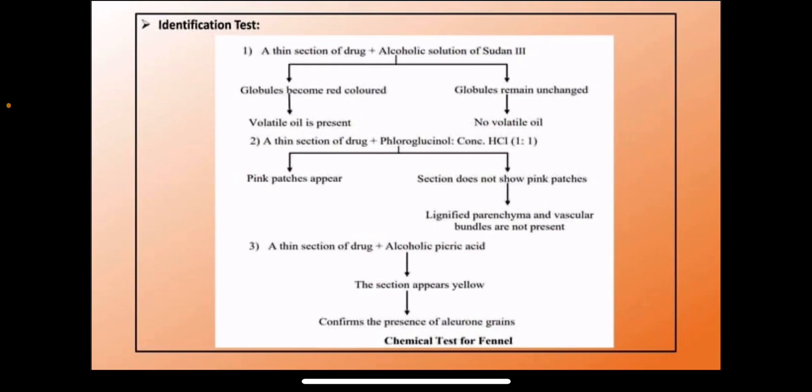Identification tests for fennel: First test — a thin section of the drug is taken and alcoholic solution of Sudan III is poured. The globules become red due to Sudan III, indicating presence of volatile oil; globules that remain unchanged contain no volatile oil. Second test — a thin section of the drug is treated with fluoroglucinol and HCl in ratio 1:1. If pink patches appear, it indicates lignified parenchyma and vascular bundles are present.